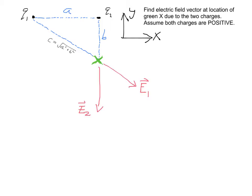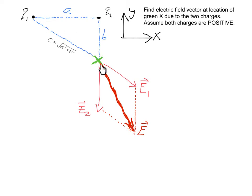We'll call the electric field contribution produced by q1 as E1, and the contribution from q2 as E2. We can also sketch the net electric field at the green x: take E1, put the tail of E2 to the tip of E1, and the resulting vector is our net electric field vector due to these two charges at this field point. Now let's do this quantitatively.